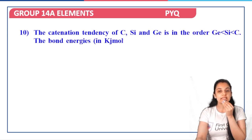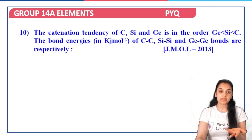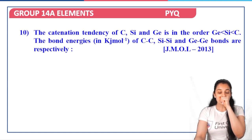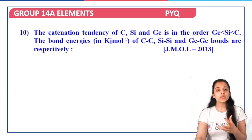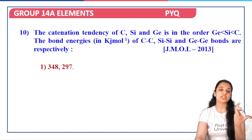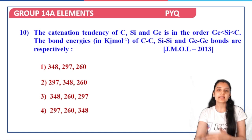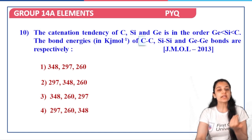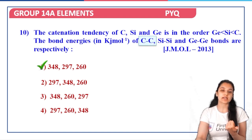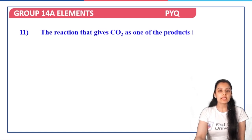Next question: the catenation tendency of carbon, silicon, and germanium is in the order C > Si > Ge. The bond energies of C–C, Si–Si, and Ge–Ge must follow the same decreasing order, since higher catenation tendency corresponds to higher bond energy. Therefore the bond energies decrease from C–C to Si–Si to Ge–Ge, and option A is the correct answer.